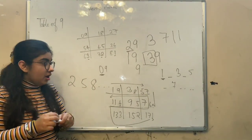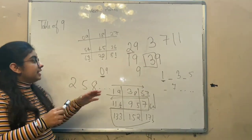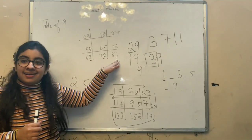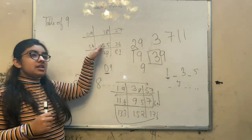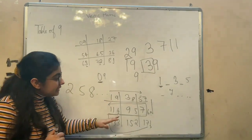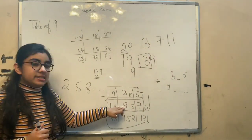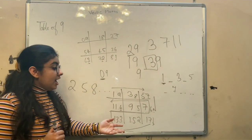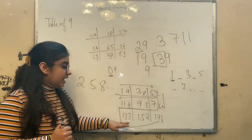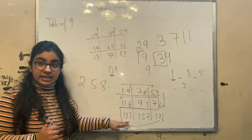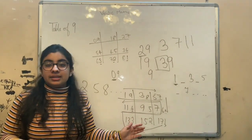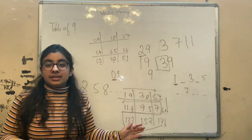You can verify your answers and see that 9×9 is 81, 9×5 is 45, 19×5 is 95, 19×7 is 133. This will be the same in all the tables you do. Thank you.